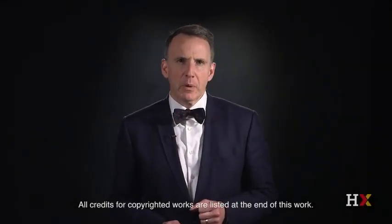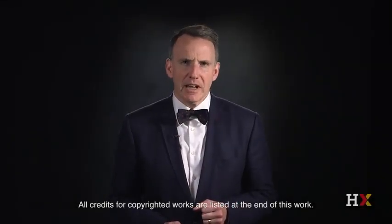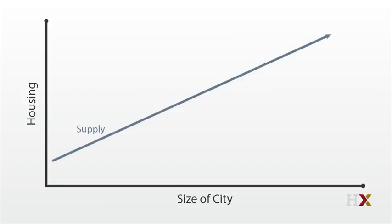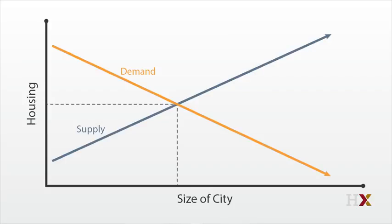In this video, we explore what agglomeration economies can mean for city size. If the agglomeration economies just cause demand to slope down a little less, then everything is normal. Demand slopes down, supply slopes up, and there is a single crossing point that determines housing prices and city size.